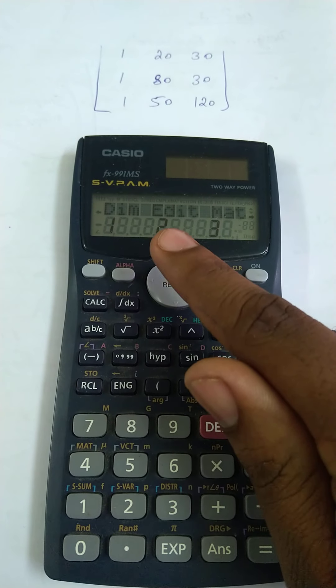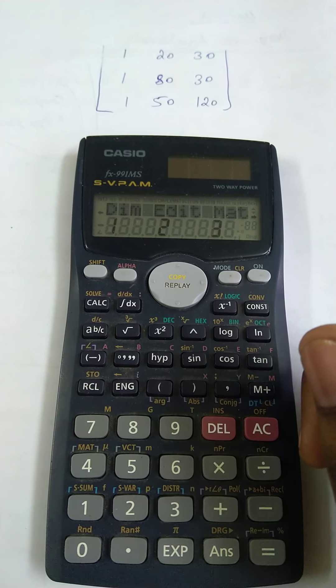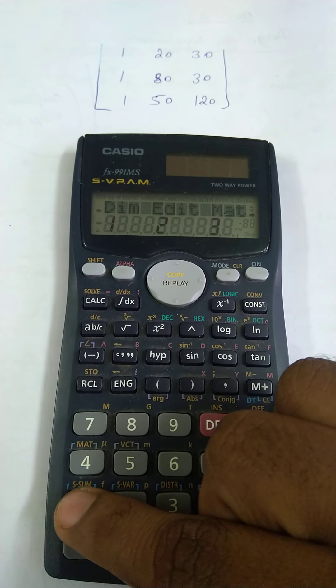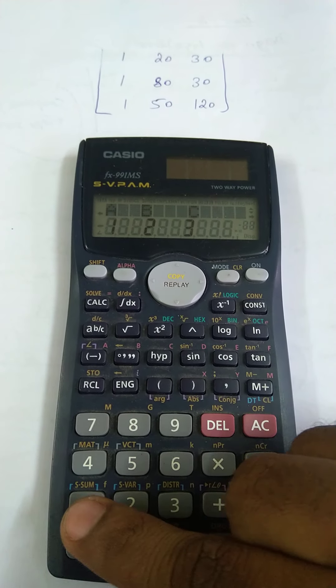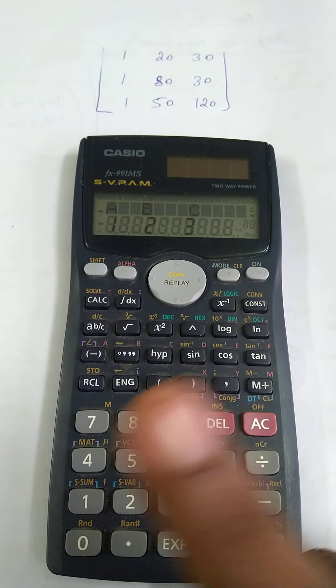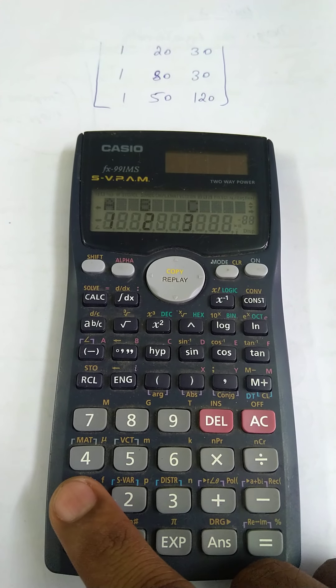You'll see 1 for dimension, 2 for edit, 3 for matrix. Press 1 for dimension, then press 1 for matrix A.